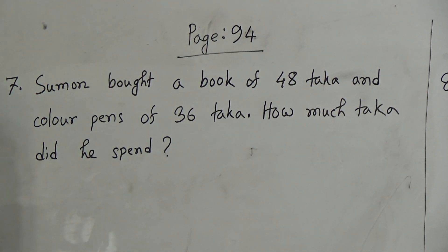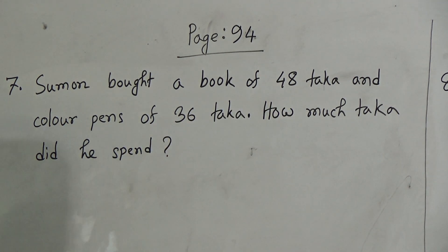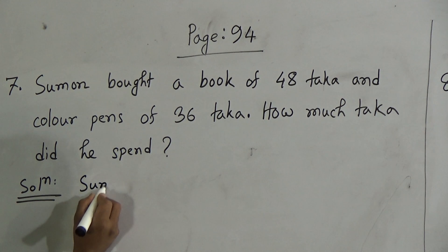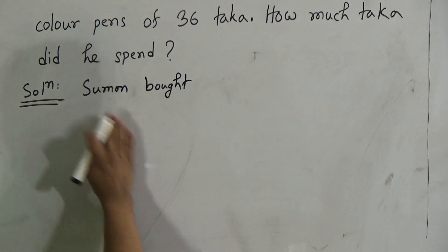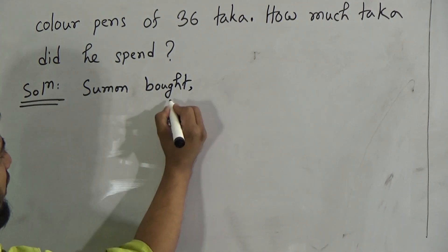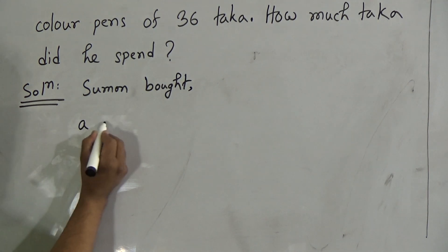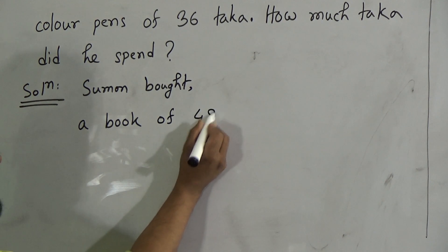Dear students, we should write down the 48 taka and 36 taka in the right side because we need to find out what is the expenditure. That's why we can write down Shuman bought. Shuman bought, we have not enough space in a single line. That's why we can write Shuman bought a comma, a book of 48 taka.